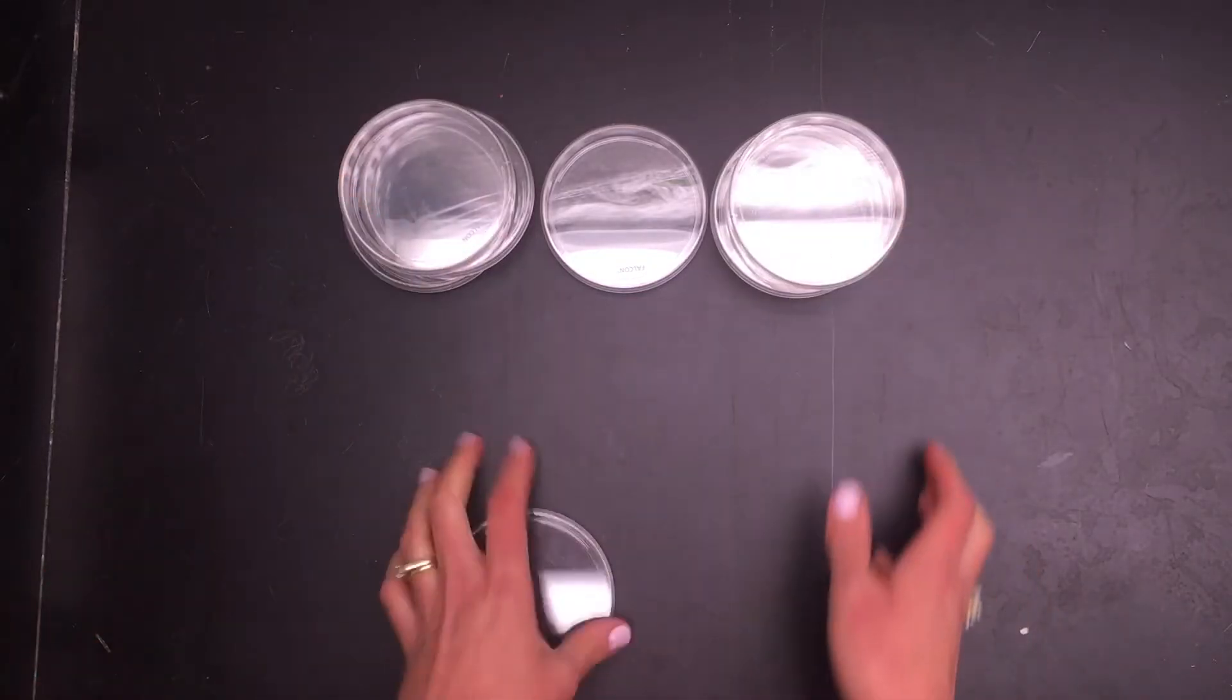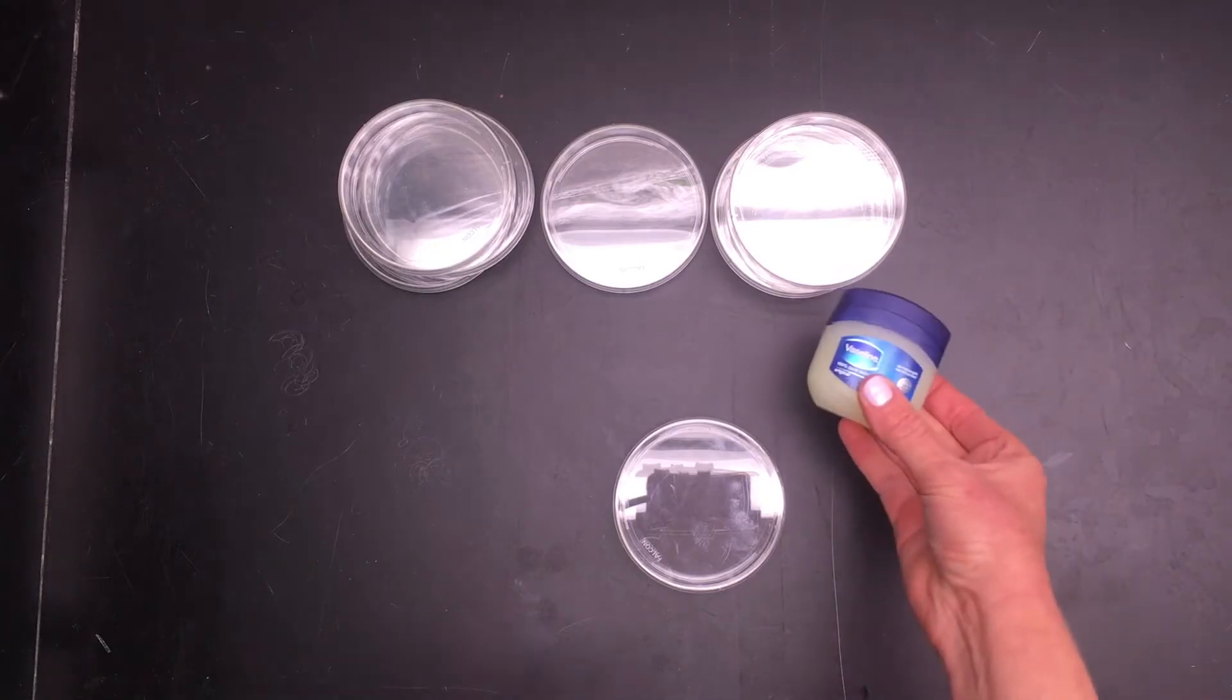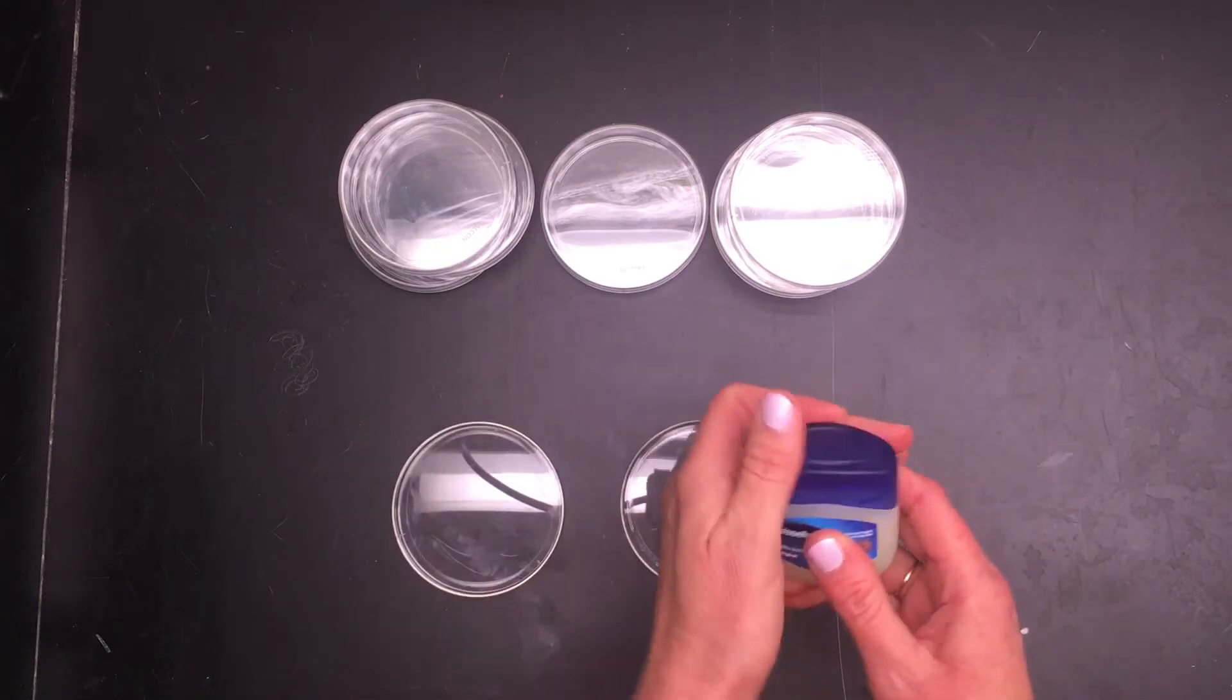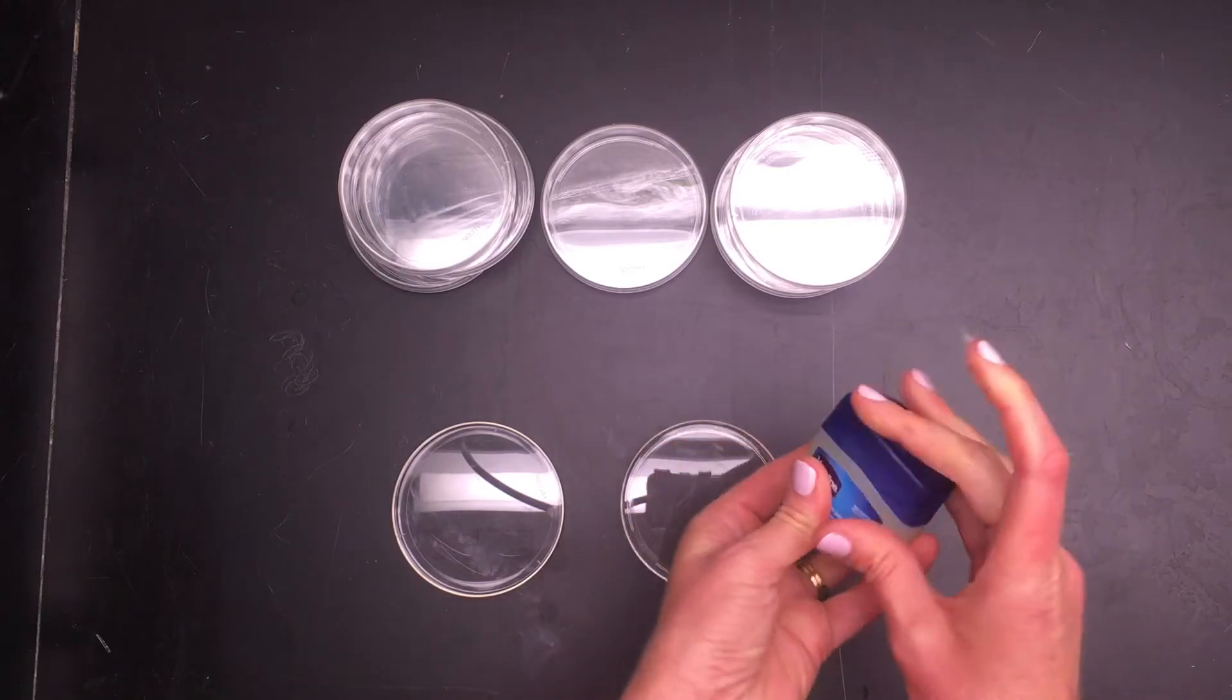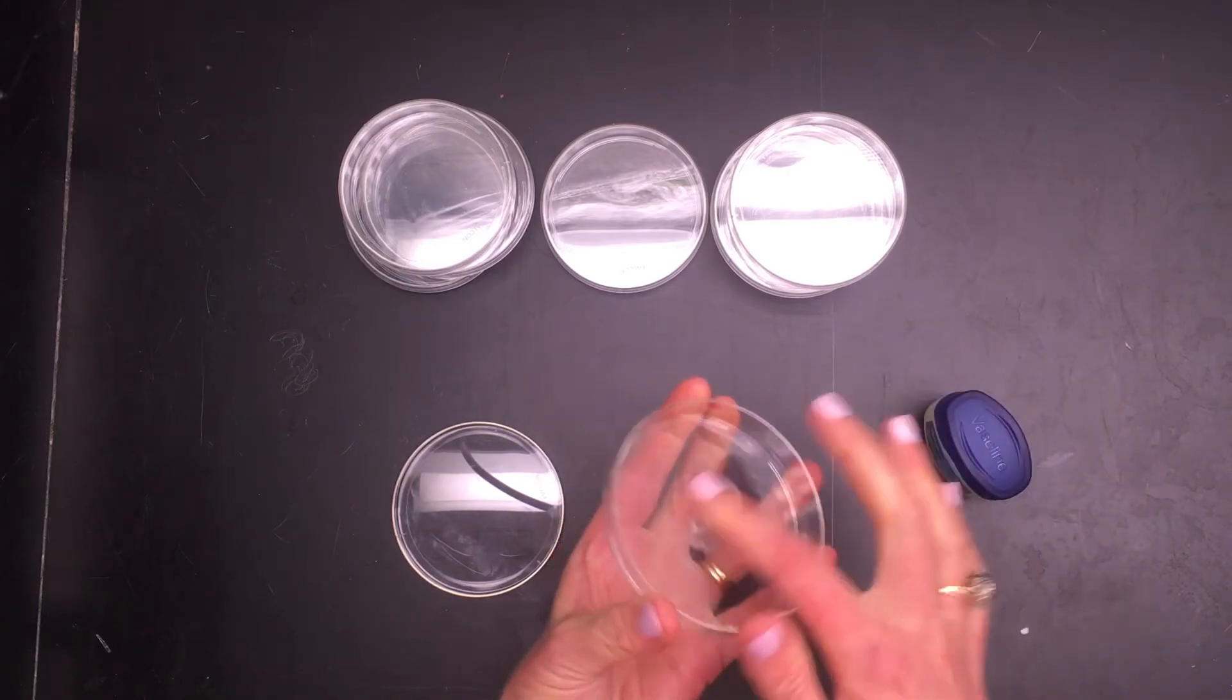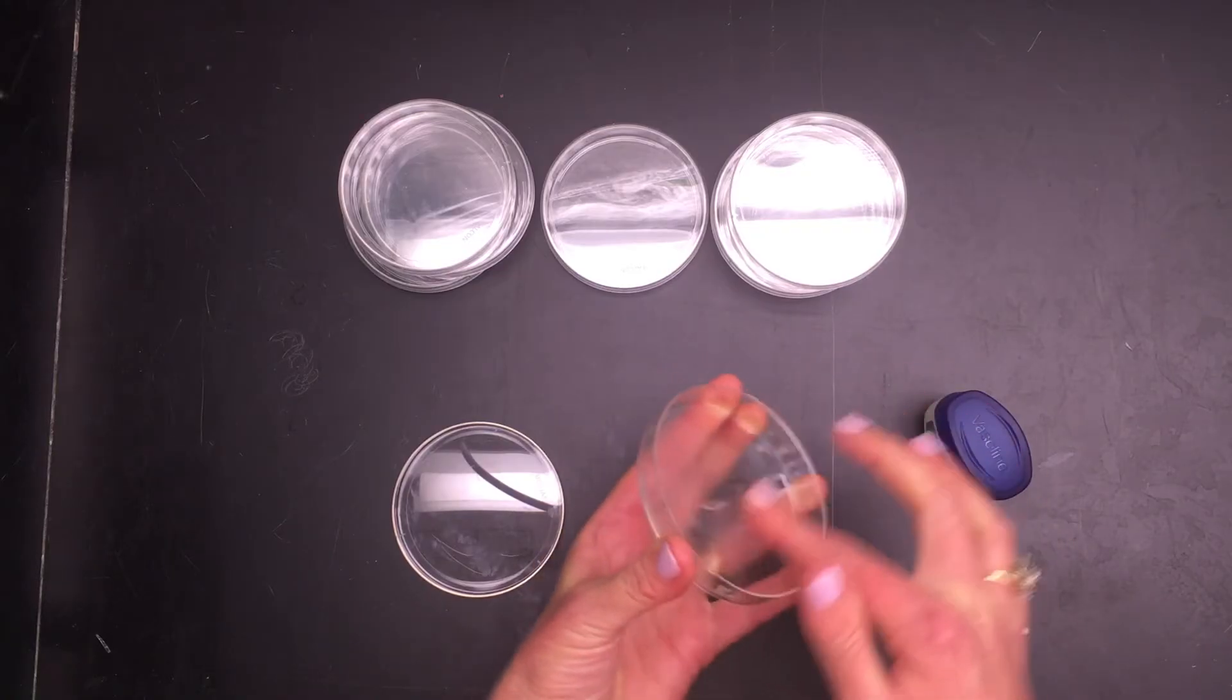So what you're going to do is take some petroleum jelly, take a very small amount on your finger, and with a thin coat you're going to rub the bottom of each petri dish.